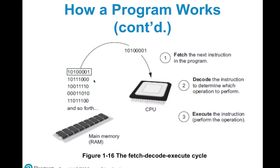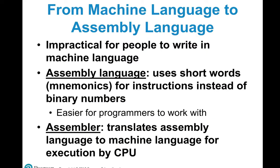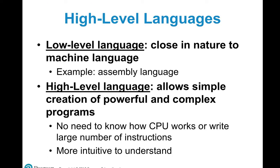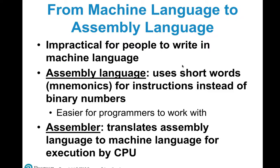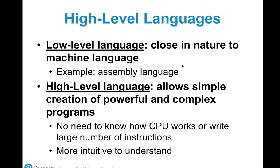Assembly language uses short words called mnemonics for instructions instead of binary numbers, and an assembler translates assembly language to machine language. Assembly is an older, low-level language that is very powerful. For example, Uber's self-driving vehicles use C programming for the majority of their code — C is a low-level language that doesn't require much bandwidth or space. Higher-level languages like Java, .NET, or even Python require more complex changes and a lot more space.